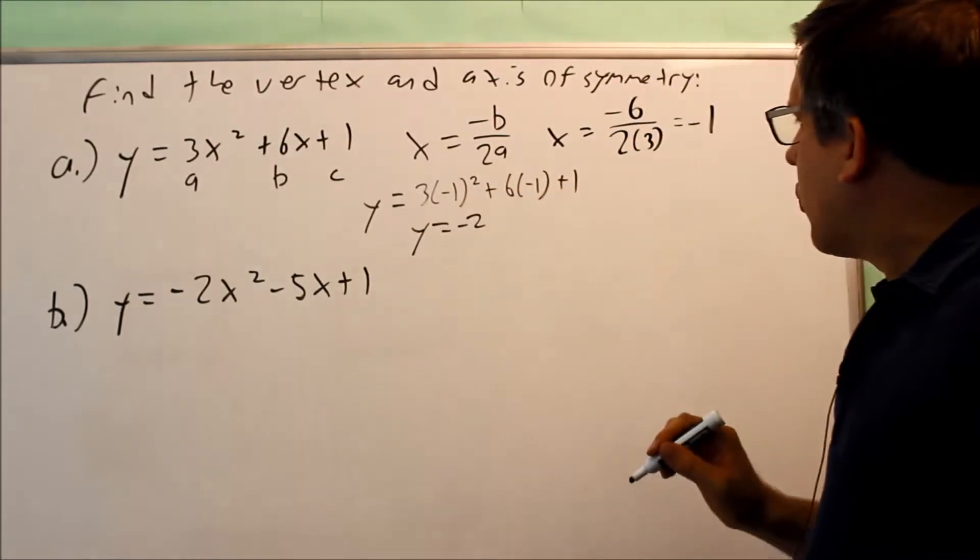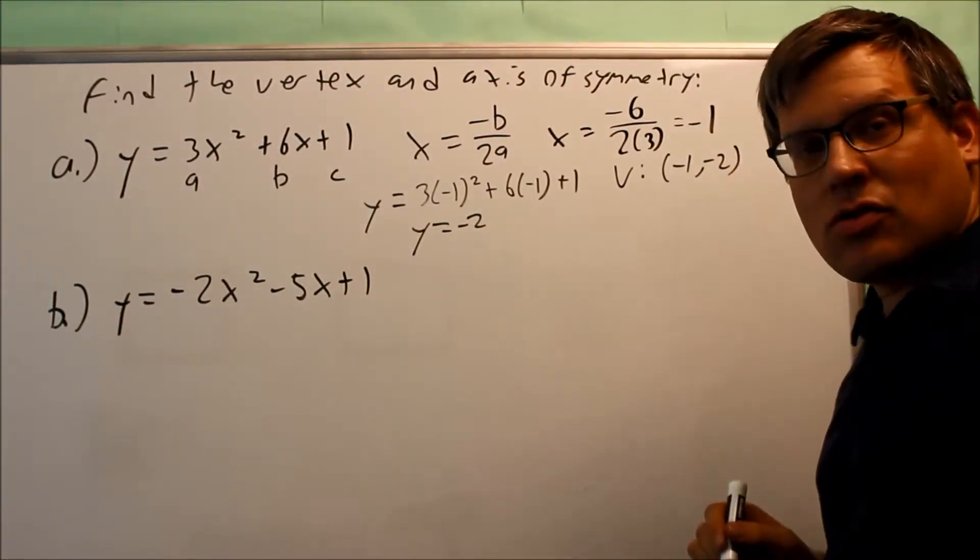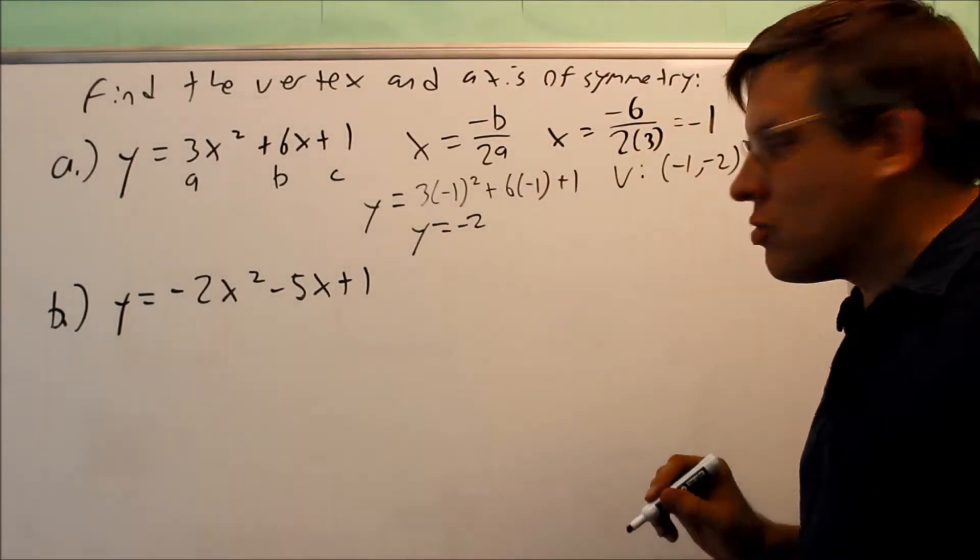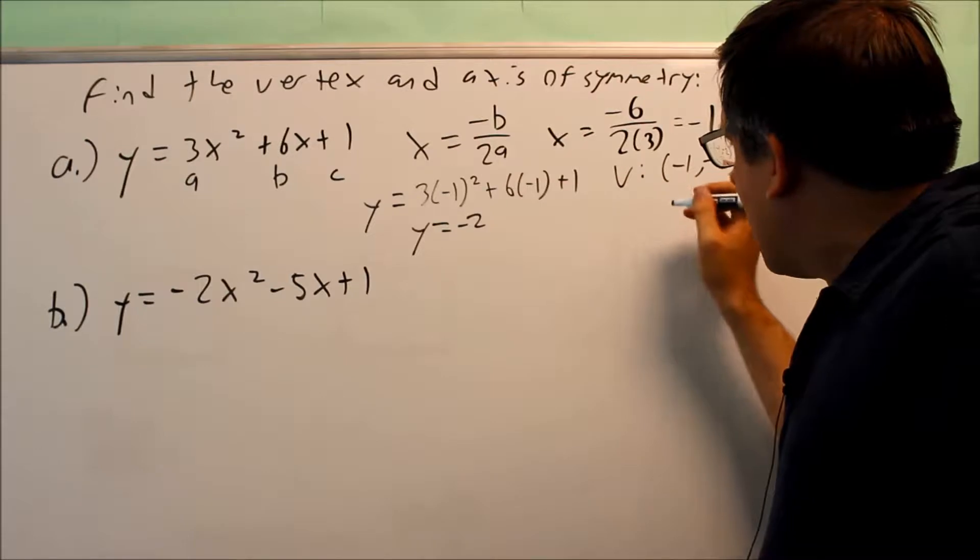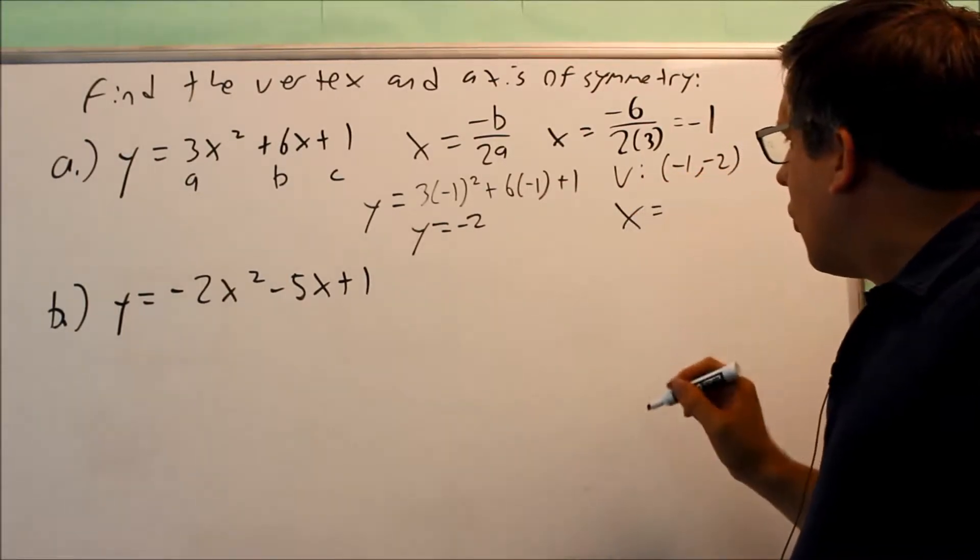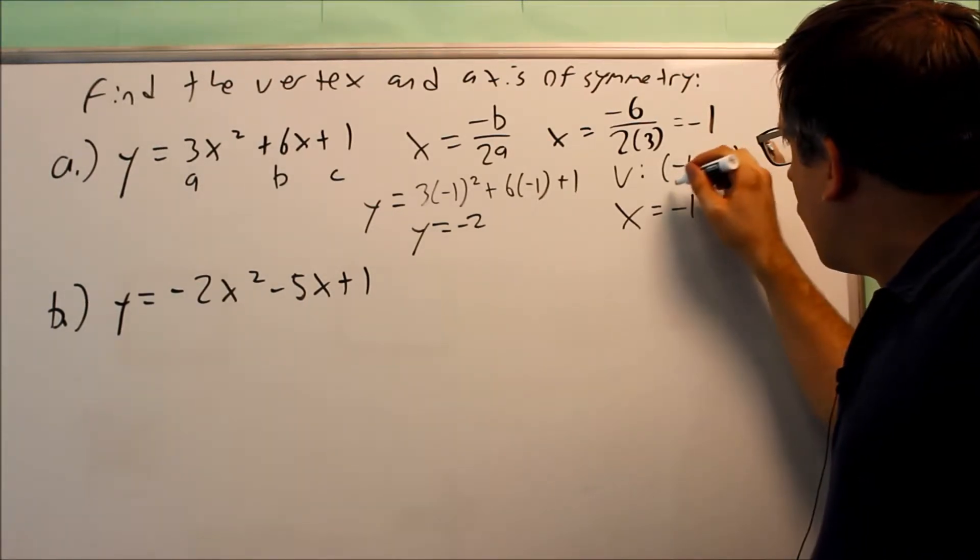So if I want to write that as a coordinate for the vertex, I get negative 1 and negative 2. That's my vertex. Next, it asks for the axis of symmetry. The axis of symmetry would be x equals, and it's going to go through the x-coordinate of your vertex. So that would be negative 1.